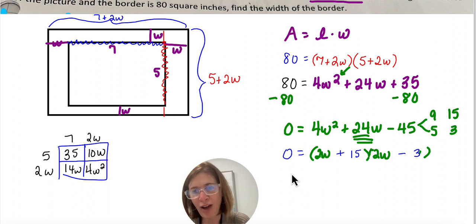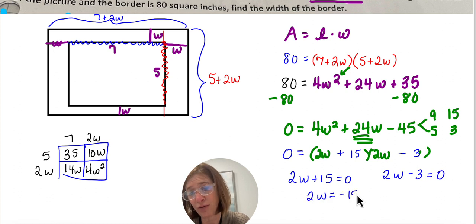Okay, so now I set each factor. I use the zero product property, and I set each factor equal to zero. And so that's going to give me 2W equals negative 15. So I can already tell that that answer is not going to work. And then this one's going to give me 2W equals 3, and I'm going to divide by 2. And I'm going to get 3 halves, which is also 1.5.